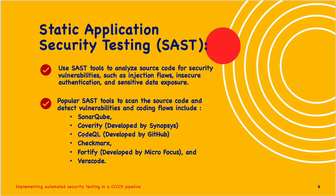Next is Static Application Security Testing, or SAST. Use SAST tools to analyze source code for security vulnerabilities such as injection flaws, insecure authentication and sensitive data exposure. Popular SAST tools include SonarQube, Coverity developed by Synopsys, CodeQL developed by GitHub, Checkmarx, Fortify developed by MicroFocus, and Veracode. These help identify issues such as buffer overflows, SQL injections and insecure coding practices.